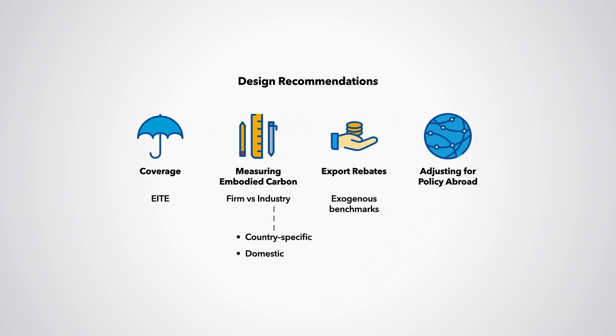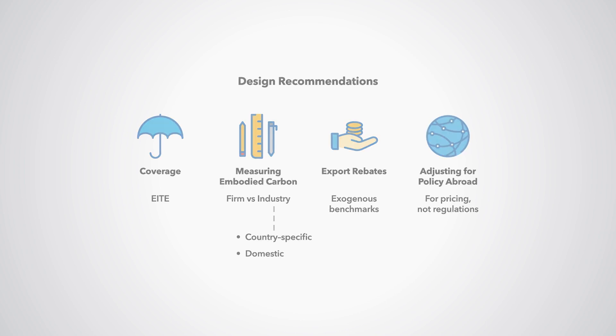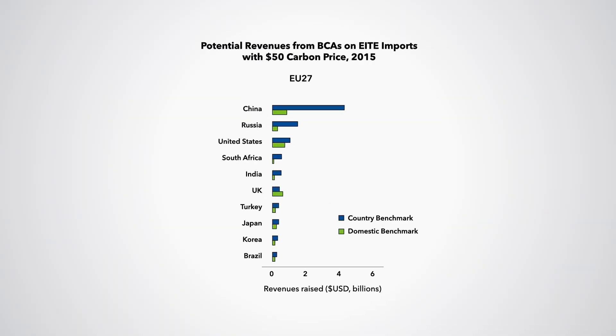Rebates for carbon charges for domestic exporters are warranted on competitiveness grounds, but should be based on exogenous industry benchmarks — if instead they are based on firm-level emissions, rebates will undermine mitigation incentives for exporters. Adjusting BCAs for carbon pricing abroad is appropriate on competitiveness grounds, but not for regulations, as regulations do not charge firms for their remaining emissions. Revenues from a BCA are modest, about 0.1 to 0.2% of GDP for a $50 per tonne carbon price. An EU BCA of $50 per tonne would collect $4 billion a year in revenue from China with country-specific emission rate benchmarks and only $1 billion with domestic benchmarks.